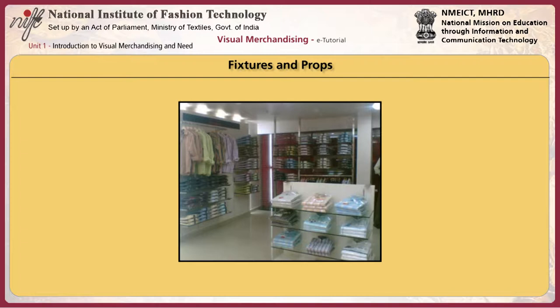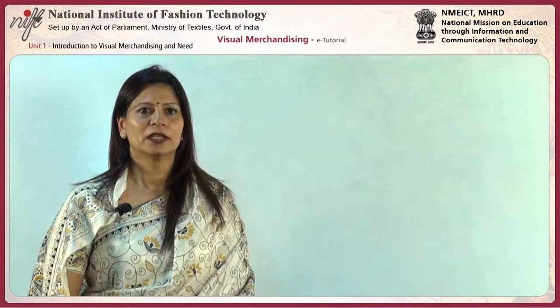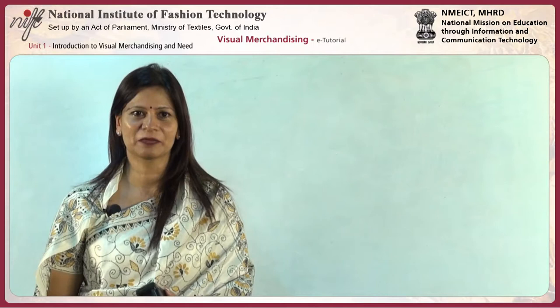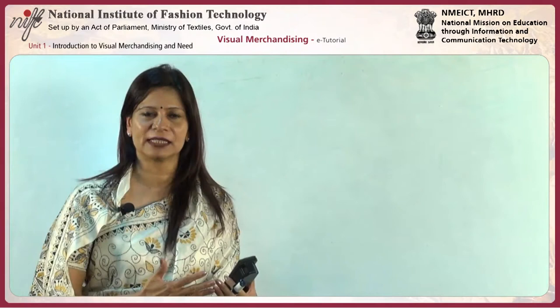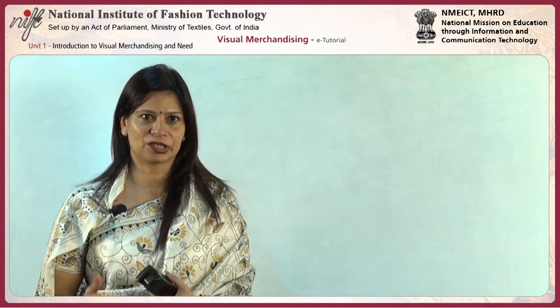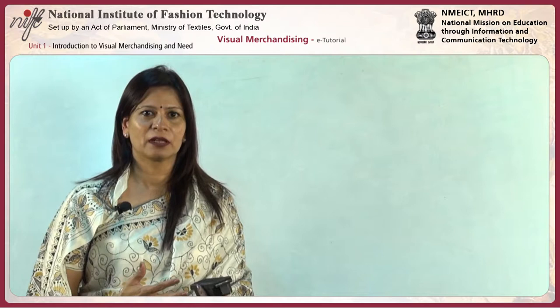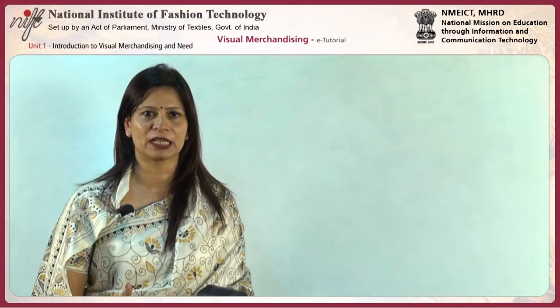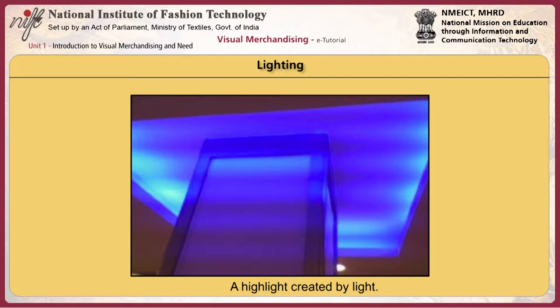The image shows fixtures and props at a Peter England store. Moving on to lighting, there are two main types: ambient lighting and accent or highlight lighting. Lighting is best understood by visuals. It is also worth noting that pubs and restaurants fall into the domain of visual merchandising, not just retail spaces.